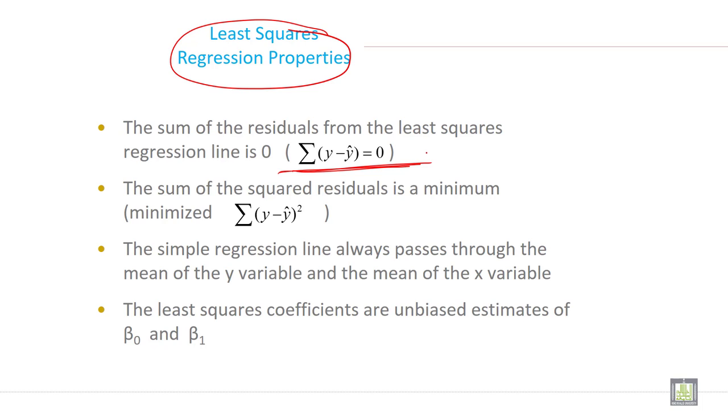The simple regression line always passes through the mean of the y variable and the mean of the x variable. The least square coefficients are unbiased estimates of β₀ and β₁.